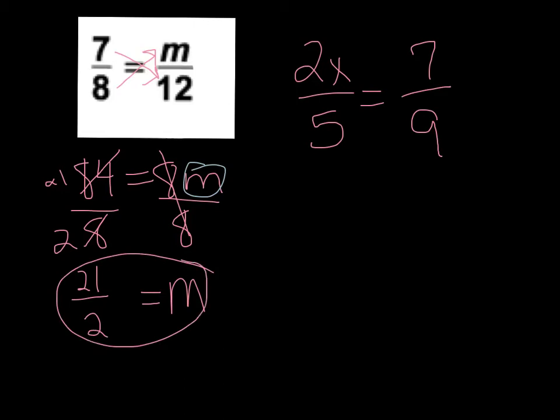All right, next one. This is where it gets a little more difficult. You notice here now, we don't have just a variable here, we have a 2x. So same rules apply. We're going to cross multiply. 2x times 9 is 18x.